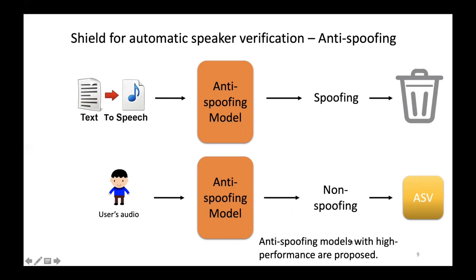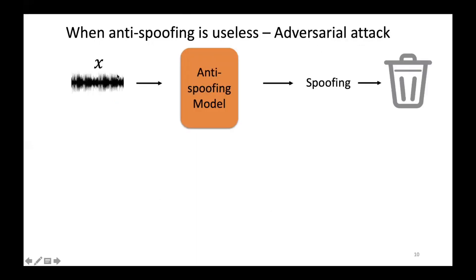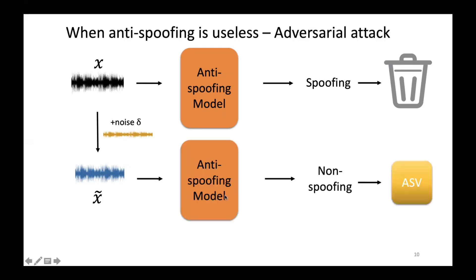A lot of anti-spoofing models with high performance are proposed. However, previous works show that anti-spoofing models are subject to adversarial attacks. Given a piece of spoofing audio, the anti-spoofing model should label it spoofing and throw it away. However, some attackers can find adversarial noise and generate adversarial audio. The adversarial noise is carefully designed, so from human perception the adversarial audio is over 99% similar to the original one. But the prediction of the anti-spoofing model will become non-spoofing. In this scenario, the anti-spoofing model becomes transparent and useless, causing security problems.